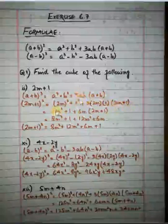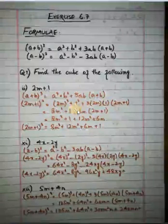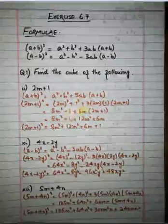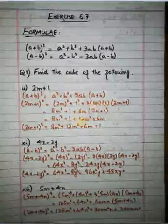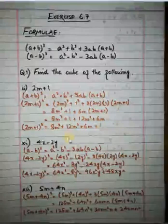Now simplification gives you: 2m whole cube equals 8m cube, 1 cube equals 1. First multiply the terms outside the bracket: 3 into 2m is 6m, and 6m into 1 is 6m. Then in the next step open the brackets: 6m multiplied by 2m gives 12m squared, and 6m multiplied by 1 gives 6m. So the answer is 8m cube plus 1 plus 12m squared plus 6m.